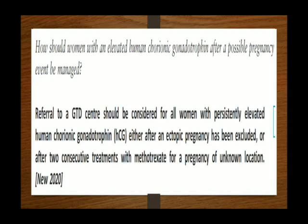How should women with elevated HCG after a possible pregnancy event be managed? Referral to GTD centers should be considered for all women with persistently elevated HCG, either after ectopic pregnancy has been excluded or after two consecutive treatments with methotrexate for pregnancy of unknown origin. We must first rule out ectopic pregnancy, and if HCG remains high after two methotrexate treatments, the patient should be referred to a GTD center.